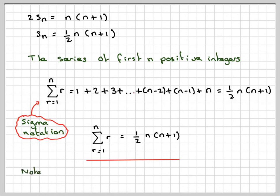We should also note this. If we add up 1 from 1 to n, that's like doing 1 plus 1 plus 1 plus 1 n times. That's going to be the same as n times 1, which is equal to n. So this one's also worth knowing.